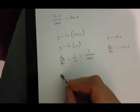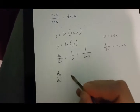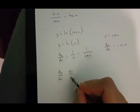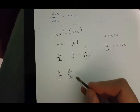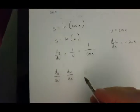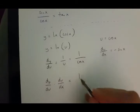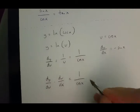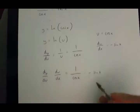Now, in this case, dy over du times du over dx, which is equal to dy over dx, is going to be equal to 1 over cos x times minus sin x.